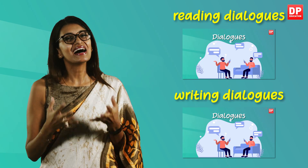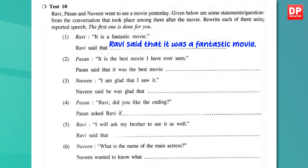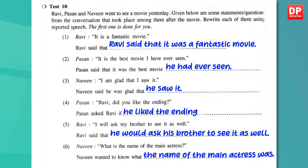Dialogues are in direct speech. Let's do the exercise together. Number one — Ravi: 'It is a fantastic movie.' Ravi said that it was a fantastic movie. Number two — Pasaan: 'It is the best movie I have ever seen.' Pasaan said that it was the best movie he had ever seen. Number three — Naveen: 'I am glad that I saw it.' Naveen said that he was glad that he saw it. Number four — Pasaan: 'Ravi, did you like the ending?' Pasaan asked Ravi if he liked the ending. Number five — Ravi: 'I will ask my brother to see it as well.' Ravi said that he would ask his brother to see it as well. Number six — Naveen: 'What is the name of the main actress?' Naveen wanted to know what the name of the main actress was.